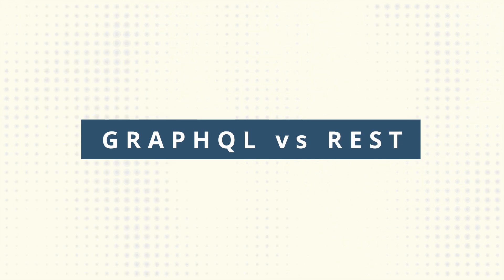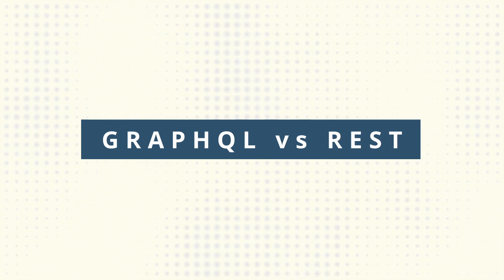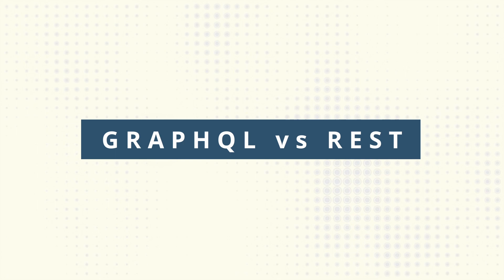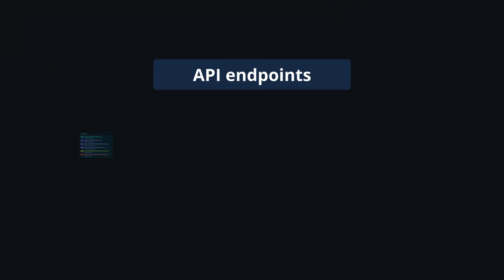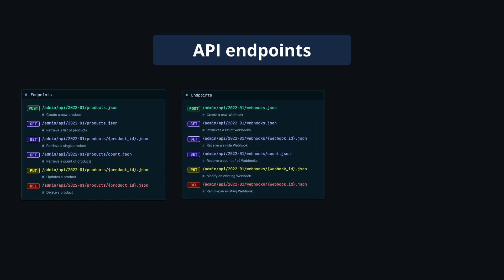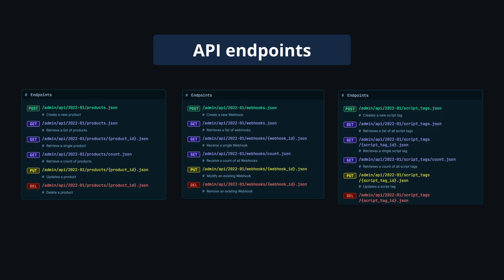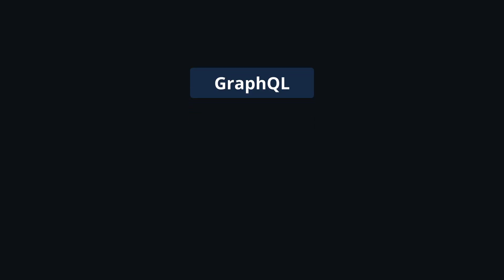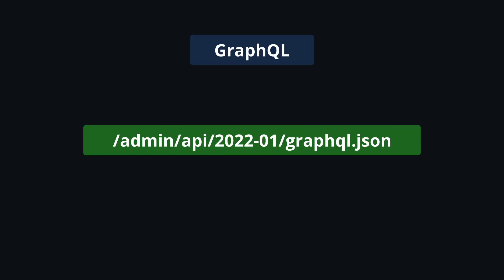You're probably familiar with REST — it's another way to ask for or modify data from an application. One of the differences between GraphQL and REST is the number of API endpoints. With REST, you have multiple API endpoints like the product API, webhook API, script tag API, and so on. Whereas with GraphQL, you only have this one API endpoint where you send your HTTP requests.